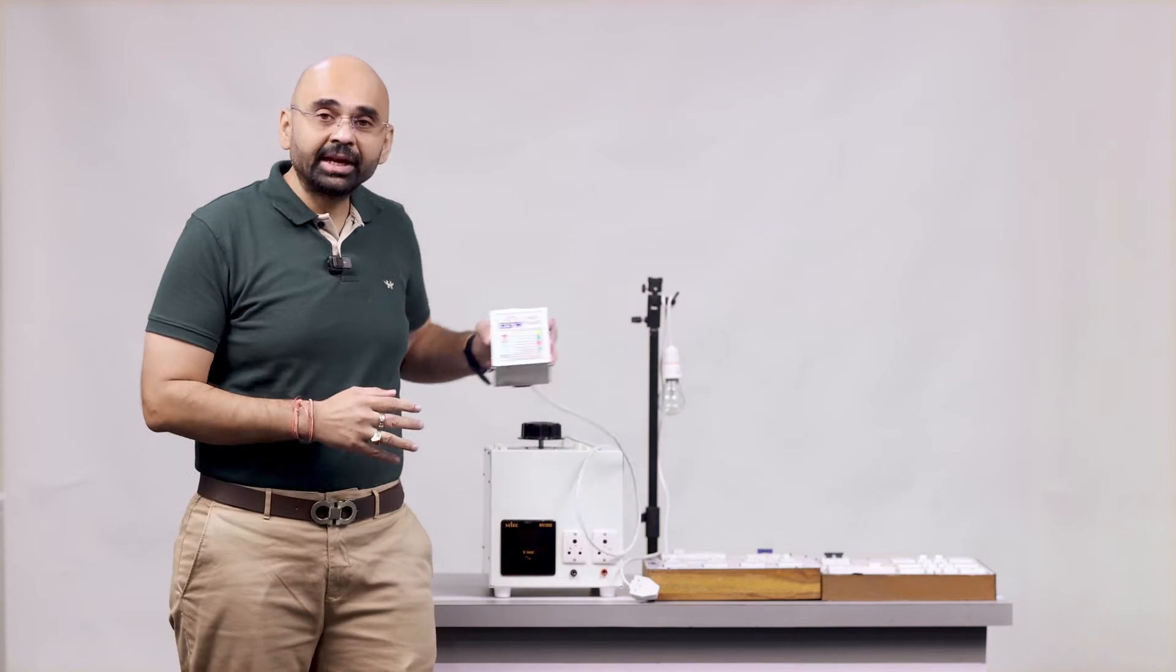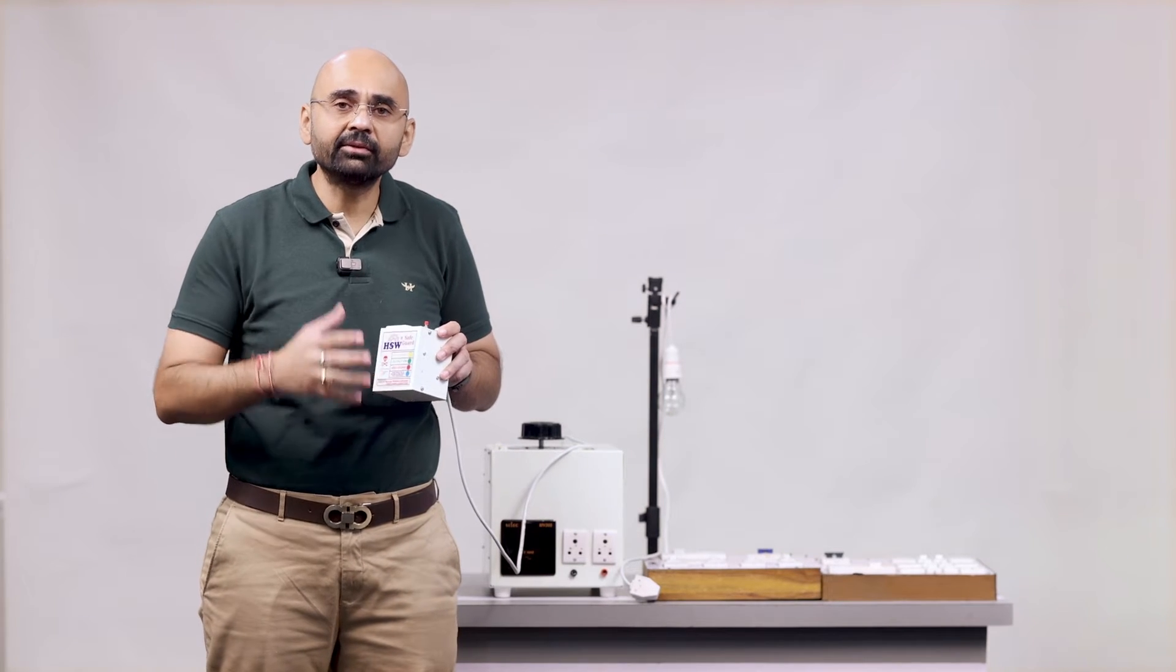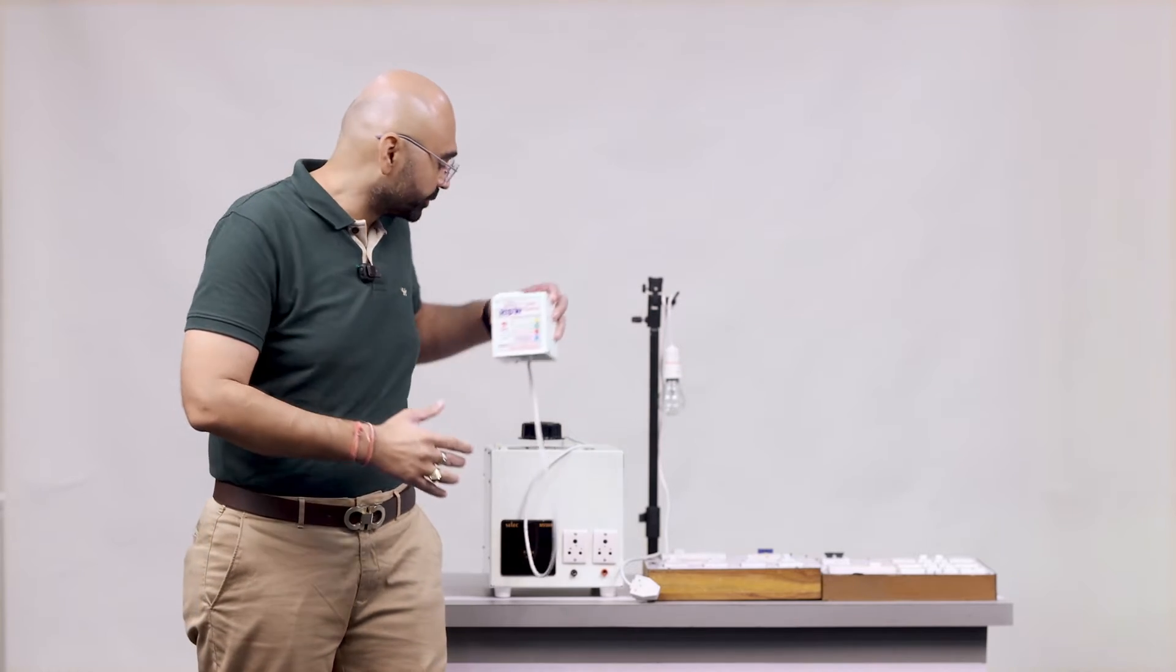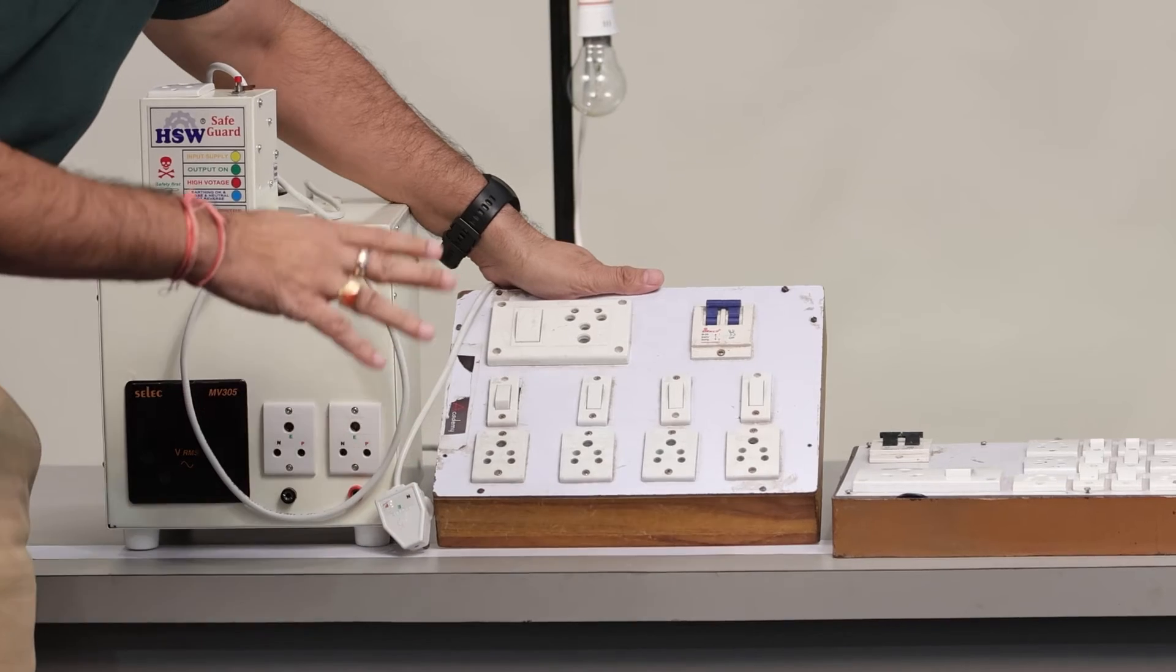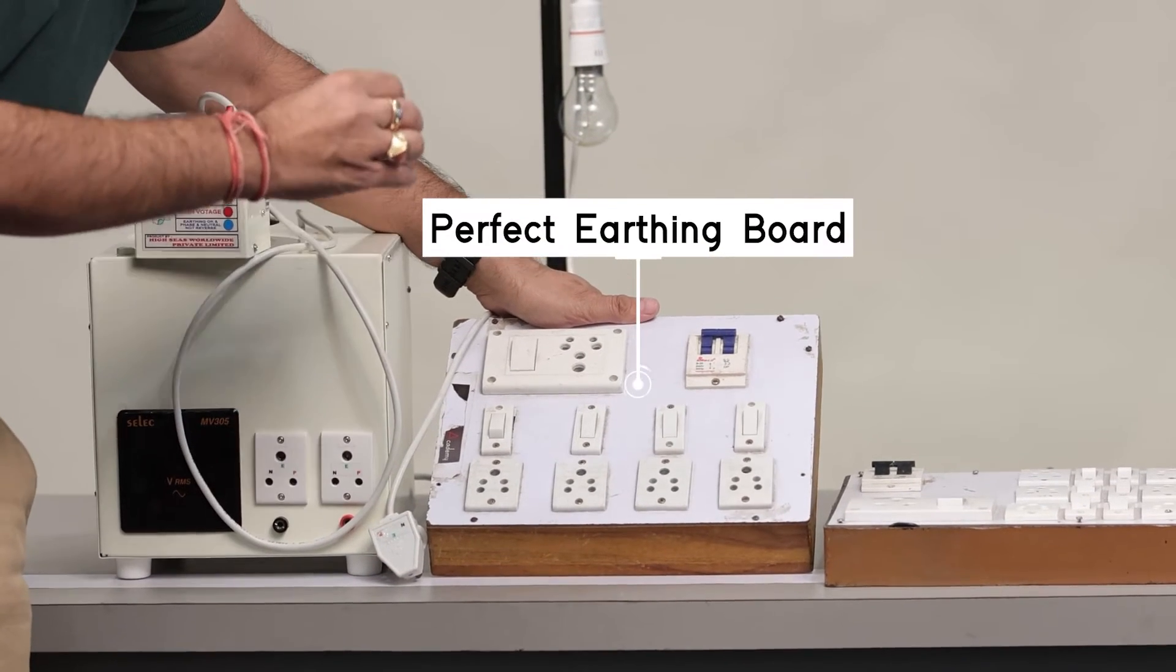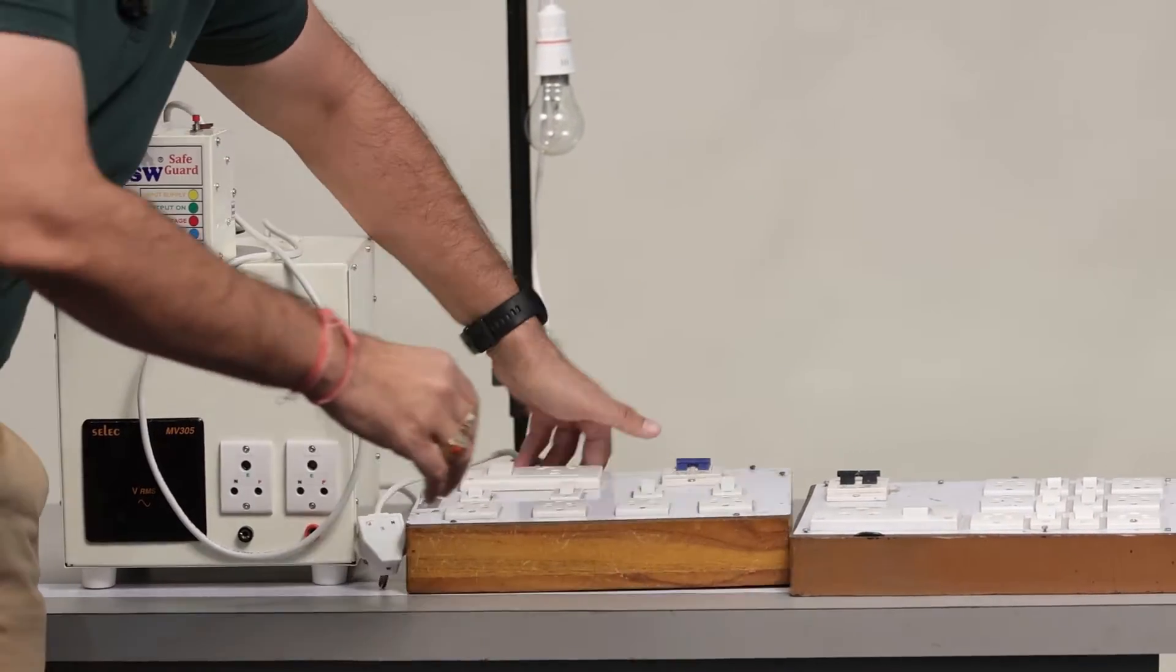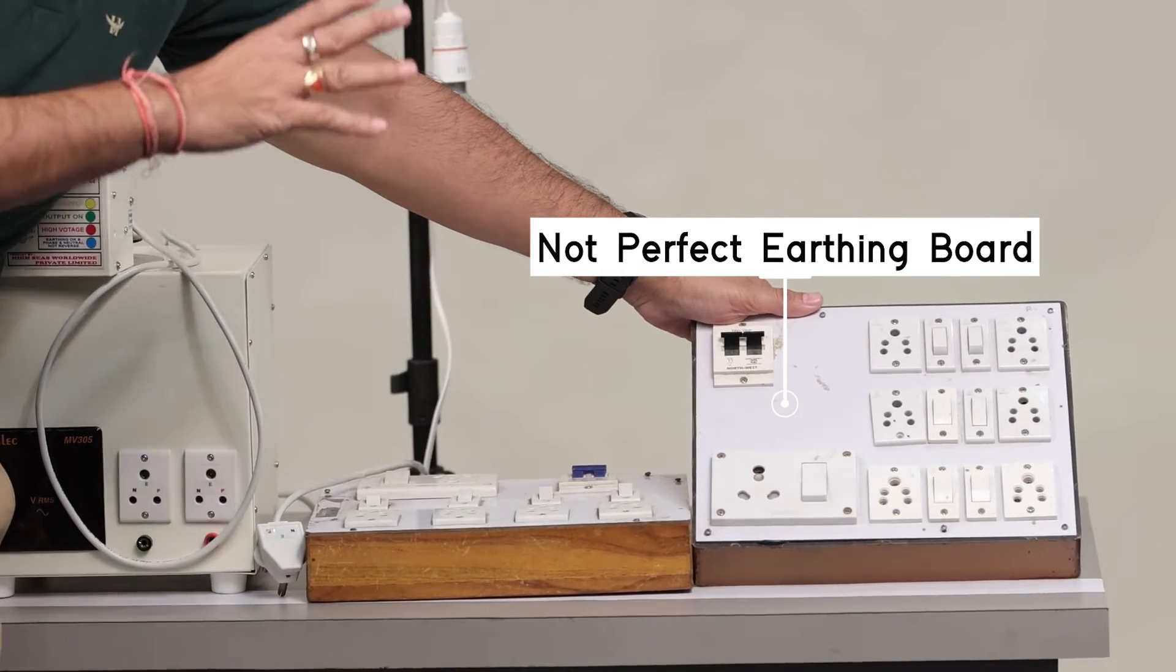So in further video we will show you how it actually works. So here we are to test how actually the safeguard works. For testing we have some props. I will introduce the props. The first thing we have a switchboard over here in which the neutral and reverse as well as the earthing is perfect, and second switchboard is here which doesn't have a proper earthing.